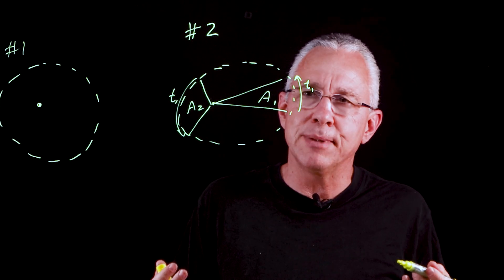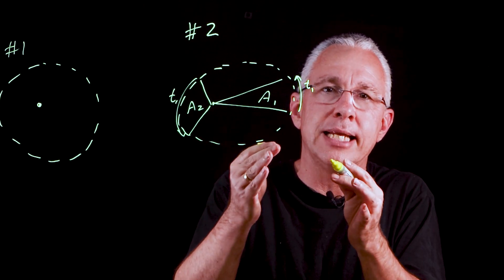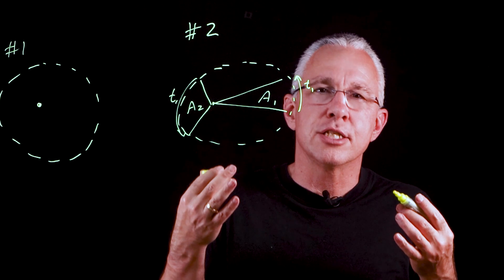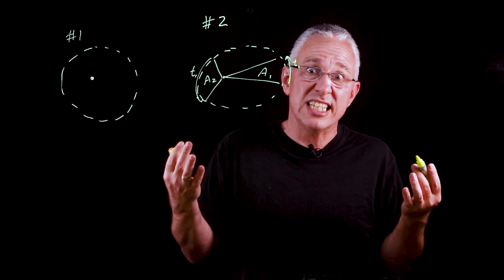But in short what that means simply is the further the planet is away from the sun, the slower it moves. And that's it.